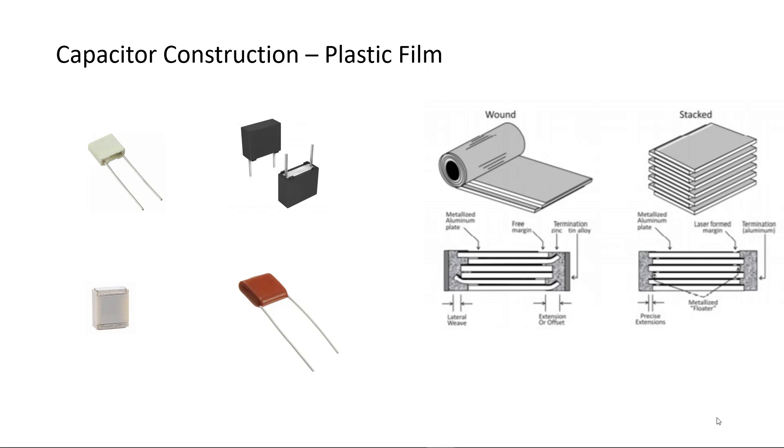Plastic film can be used to insulate two conductive plates which can be rolled or stacked. The plastic film can also have a thin metal layer deposited on it instead of using a separate metal foil conductor. Plastic film capacitors are non-polarized.